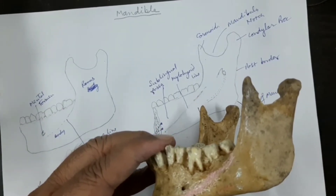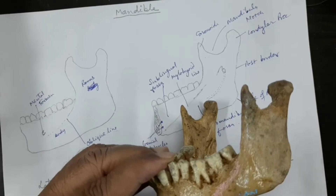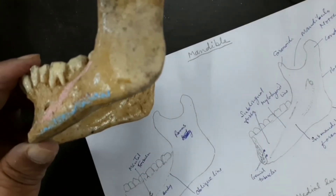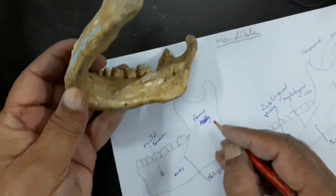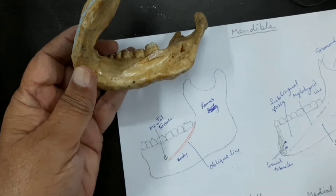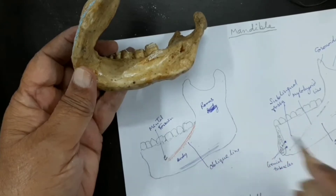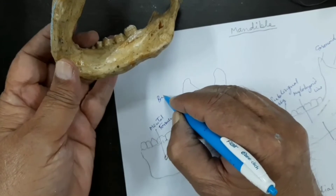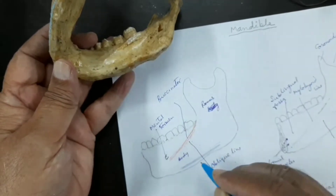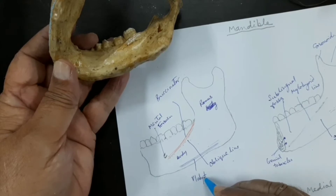Near the lower border of the body, just above the lower border on the external surface — not the base but on the external surface where I am marking it here — this is the origin of the platysma. So posterior to the third molar is the buccinator (B-U-C-C-I-N-A-T-O-R), and here is the platysma (P-L-A-T-Y-S-M-A). That is the origin of the platysma muscle.